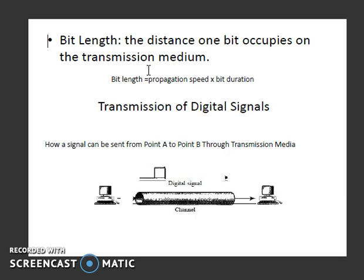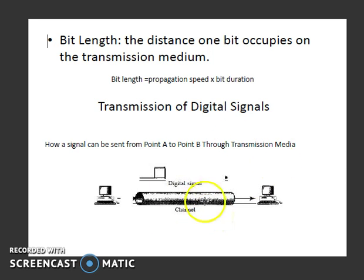Now coming to transmission of a digital signal — when a signal is transmitted from point A to point B, it needs a transmission medium, and this is called a channel. It can be any physical medium like wire — we have learned about different types of wire. It can be any such media.